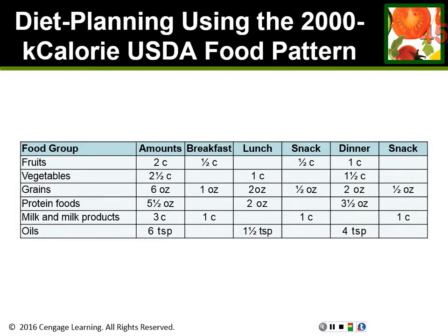This example shows how to take what you're supposed to eat in a day and spread it out over meals. For breakfast, you might have half a cup of oatmeal, a piece of toast, and a cup of milk. This is how you take what you have to eat for one day and spread it out over meals and snacks.